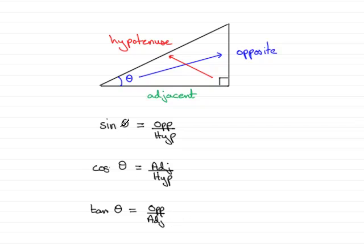Now, you'll find these three trigonometric ratios, sine, cos, and tan, on any scientific calculator.